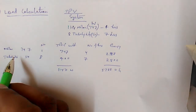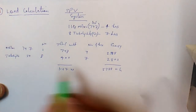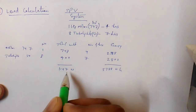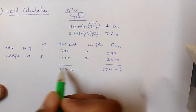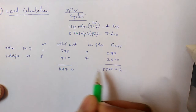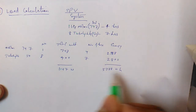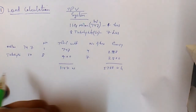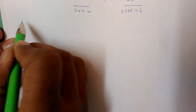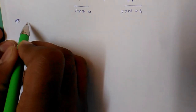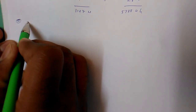By this you can calculate the load. Our total load is 1147 watts and total energy is 5788 watt-hours. Next point is electronic component selection.